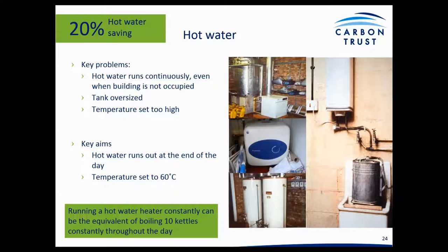The hot water system is often quite forgotten about — it can be running continuously, which is equivalent to keeping your kettle on all the time, adding up very quickly to a lot of energy consumption. Aim to heat only the hot water you actually need so it runs out at the end of the day and you're not consuming energy when the building isn't in use. We recommend setting hot water temperature to only about 60 degrees — high enough to kill off any risk of Legionnaires' disease but all you actually need for showers, taps and cleaning.